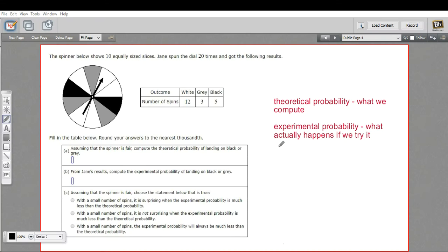In this problem, we are looking at the difference between theoretical probability and experimental probability. Basically, theoretical probability is what we compute. So we do some math to make a fraction or a decimal or a percent. That is the probability of something happening.